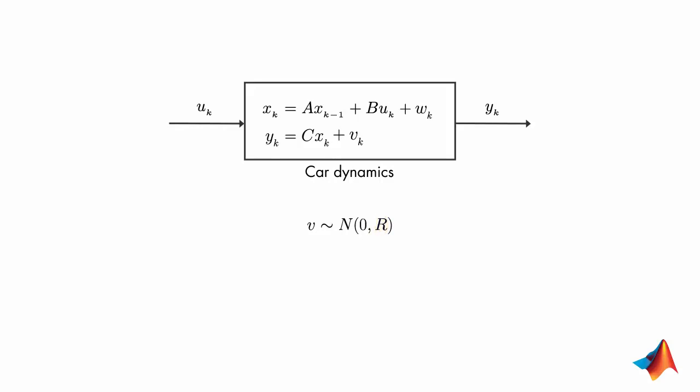This means if we measured the position of the car, let's say 100 times at the same location, the noise in these readings will take on values with most of them located near the zero mean and fewer located further away from it.